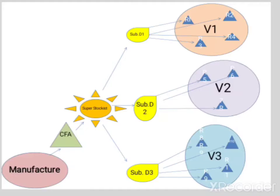From the super stockists, the produce is transported to sub distributors. You can see three different sub distributors who collect all the stock of commodities. They select particular villages — distributor one selects a particular village, the second distributor goes to another village, and so on. The sub distributor reaches out to the retail outlets in that particular village, making it easy for the manufacturer to reach rural customers.